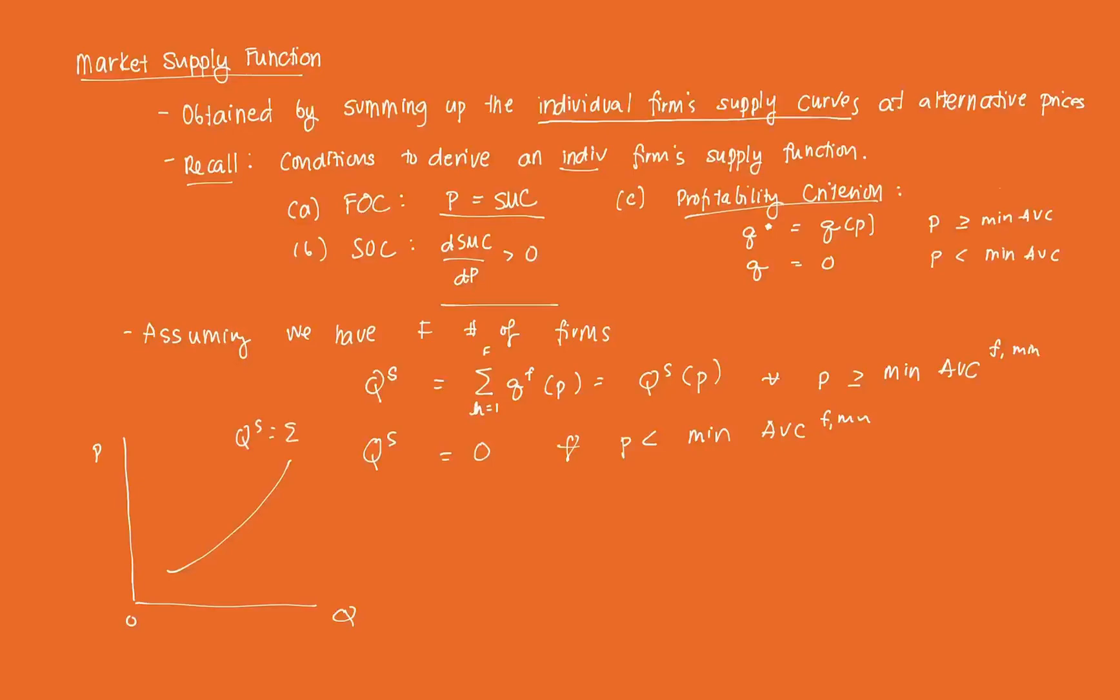Which is equal to sum, F equals one to F of Q, F, P. And that's the derivation for the market supply function.